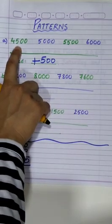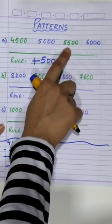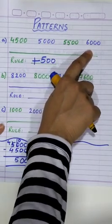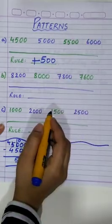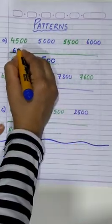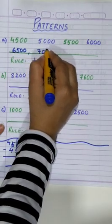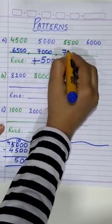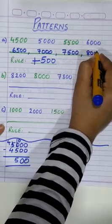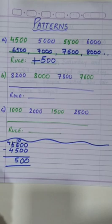4,500 plus 500 makes 5,000. Plus 500 makes 5,500, then 6,000. 6,000 plus 500 will be 6,500, then 7,000, then 7,500, then 8,000, and so on. Easy!